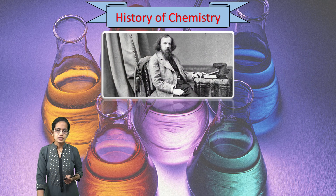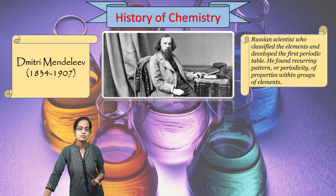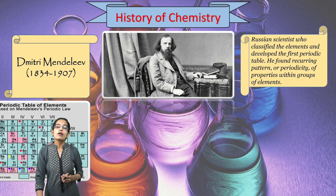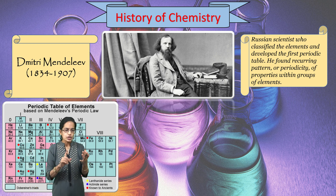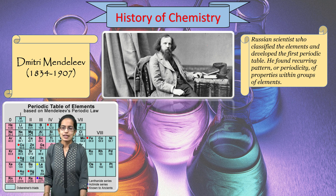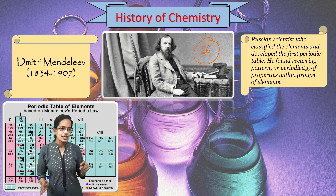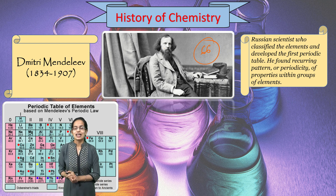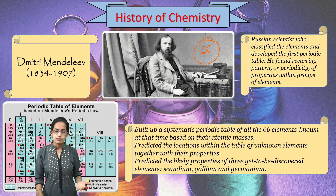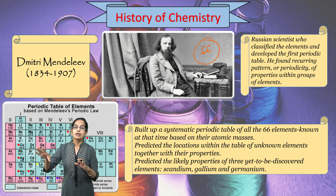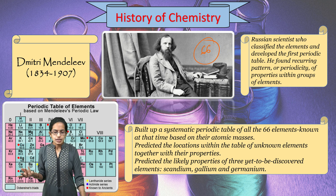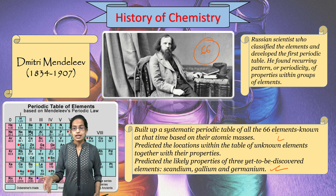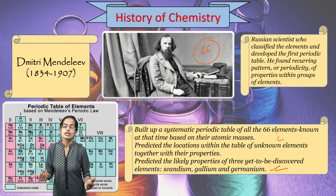The next important development in history is Mendeleev. He was the first to develop the periodic table. He founded the concept of periodicity and properties within groups of elements. His periodic table had 66 elements, which was the known number at the time. He also determined their atomic masses and predicted the location of unknown elements — specifically scandium, gallium, and germanium.